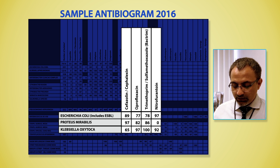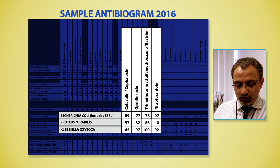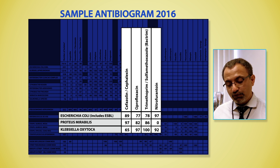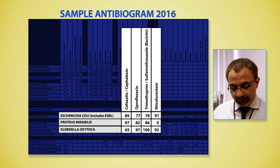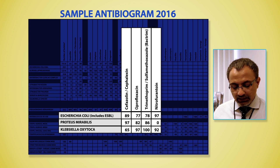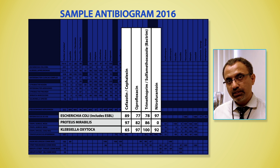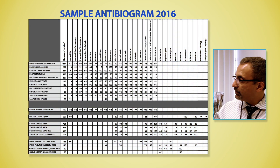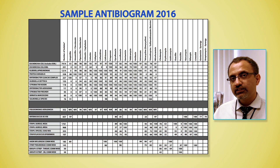A case like this is challenging given the number of different organisms that have been isolated in the past, which will direct our future empiric choices. As a general rule of thumb, a good empiric antibiotic should have a susceptibility rate of 80% or greater for the target organism. In this case, ciprofloxacin or Bactrim appear to be better choices for this specific patient.